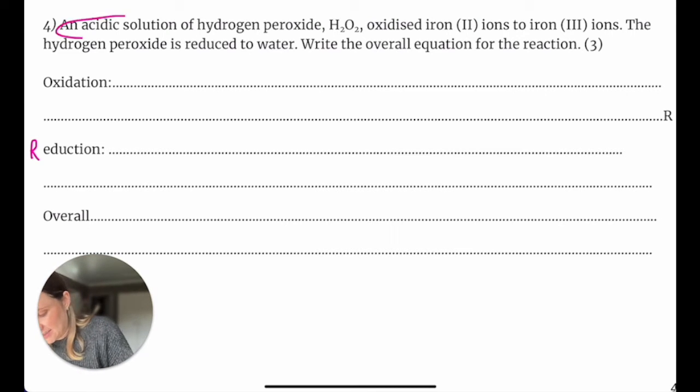So they say an acidic solution of hydrogen peroxide, which already is a big clue that we're doing redox equations here. I'll explain why in a second. It oxidized iron (II) to iron (III) ions.